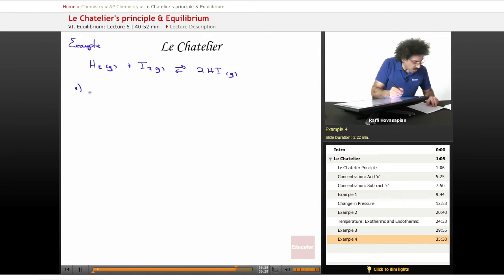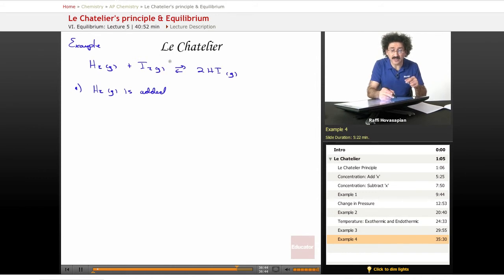Okay, so now what happens when H2 gas is added? Well, if H2 gas is added, the system is going to want to move in a direction that actually depletes what I added. It wants to offset it. In order to deplete H2, it has to move to the right. So it's going to shift right.